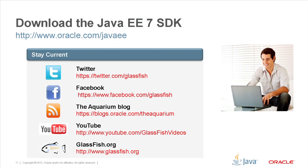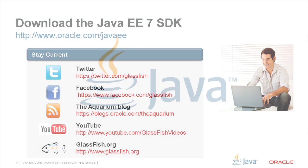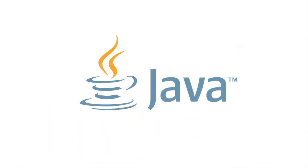I'd be remiss if I didn't remind you to go ahead and take a look at the EE7 SDK. There are downloads available and plenty of social media to stay current on the happenings in this exciting new space. This ends our talk about JSR 352 batch applications for the Java platform. This has been your speaker, Chris Vignola, and I thank you for spending your time to listen to this information. Have a great day.